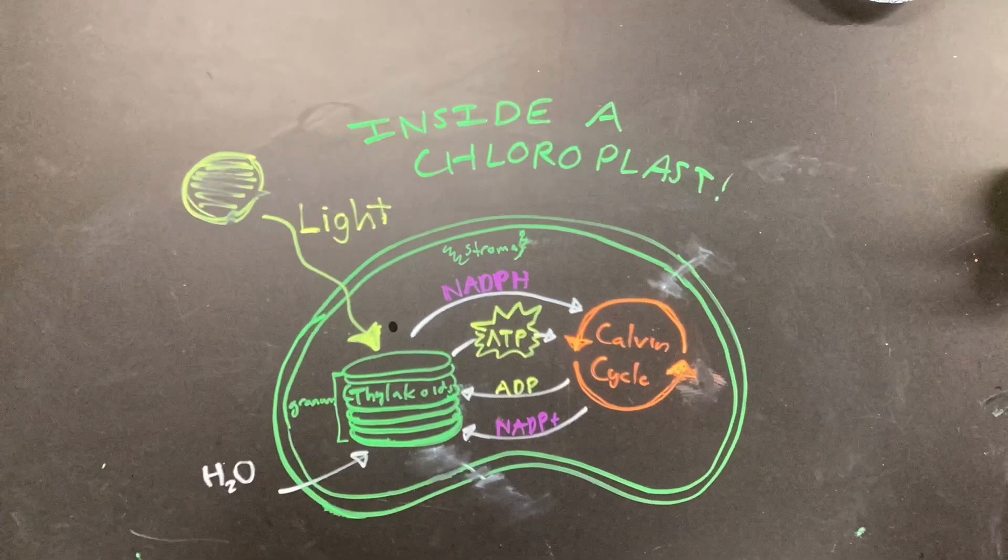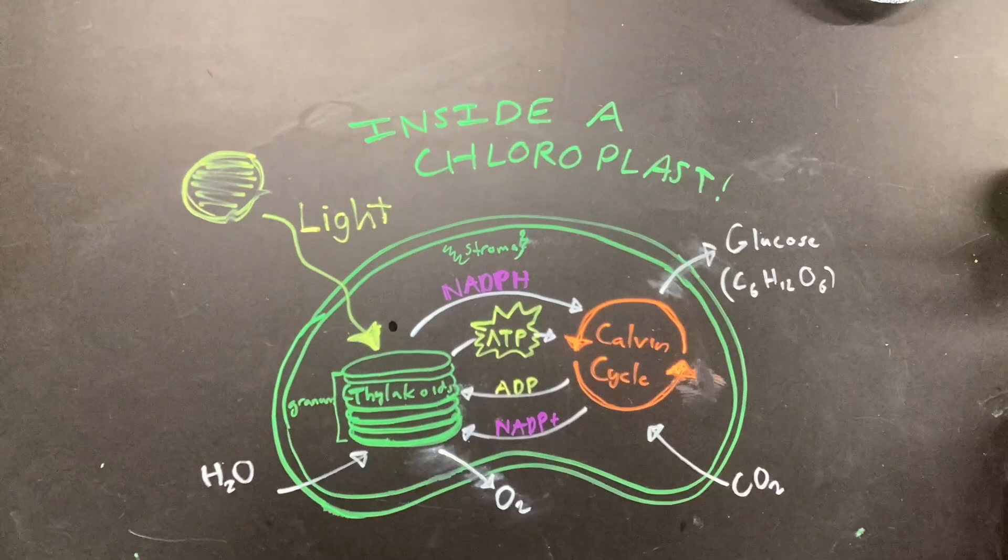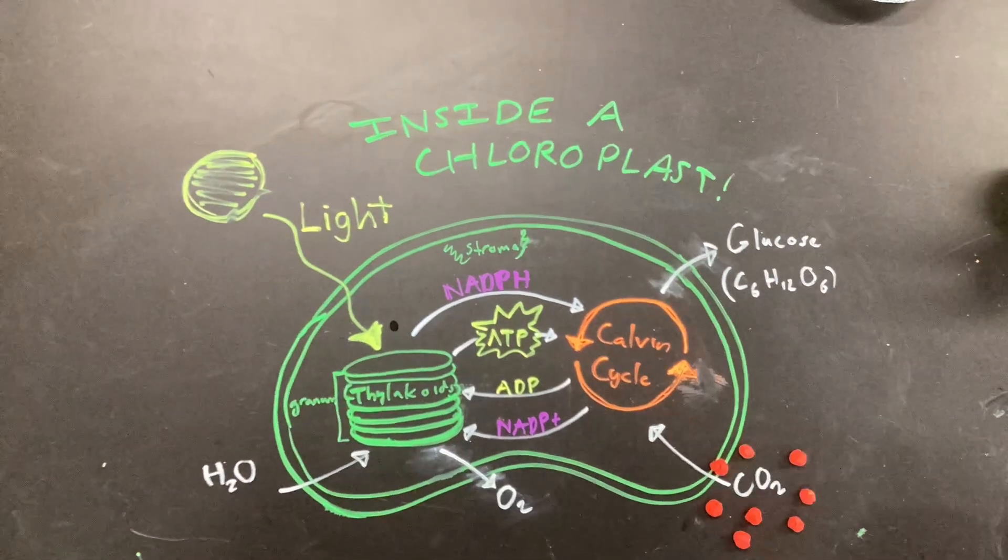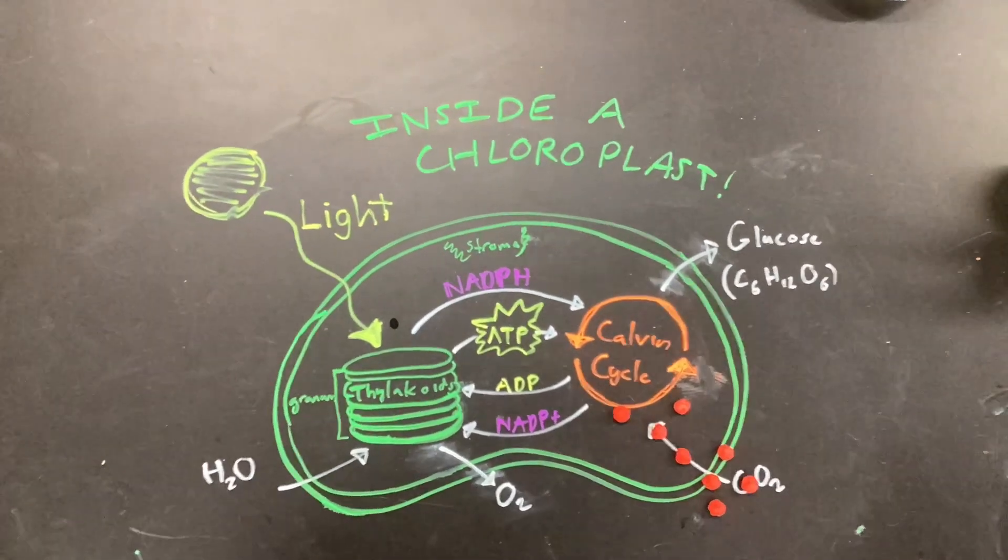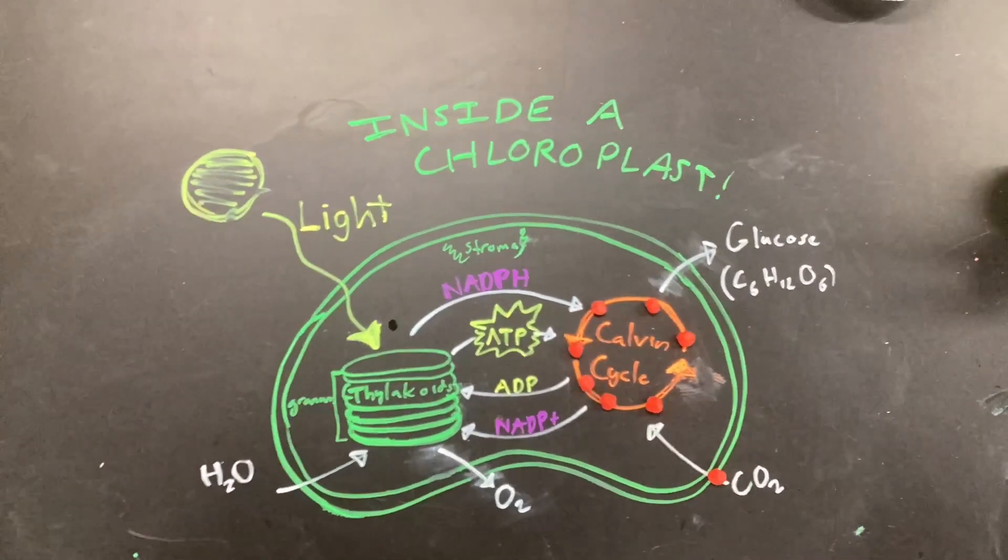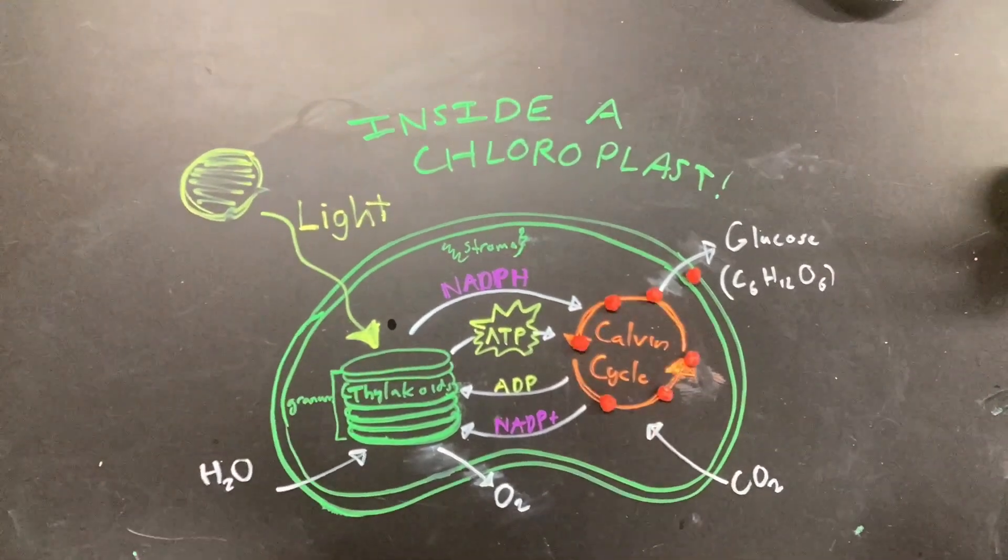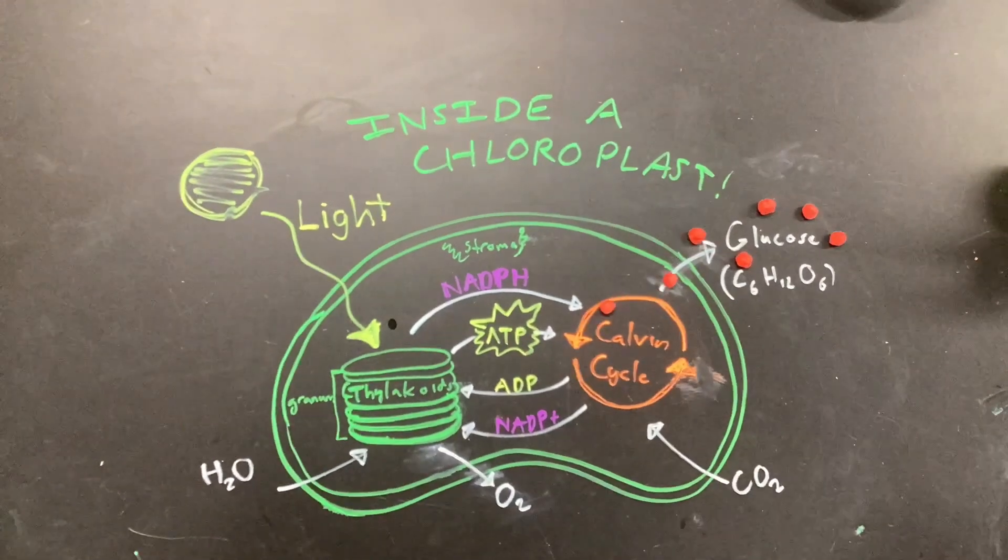Inside the chloroplasts, this carbon can be used in the process of photosynthesis to help power the light-independent reaction known as the Calvin cycle. Carbon enters this cycle and exits as part of the sugar glucose.